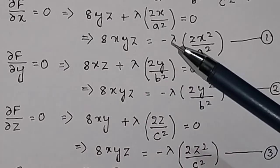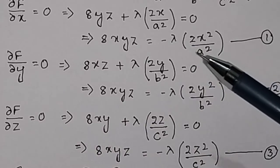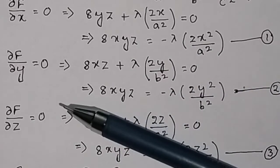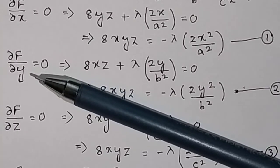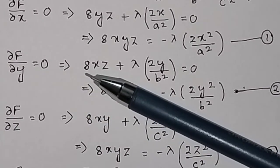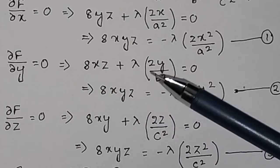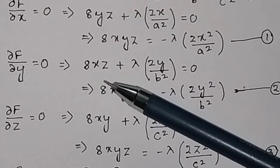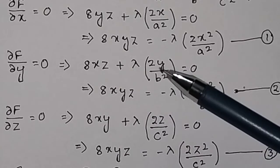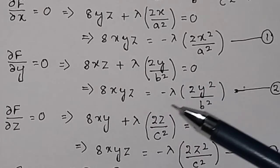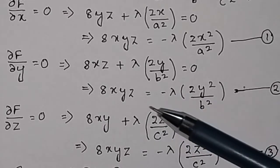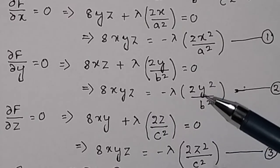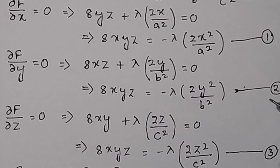Multiplying both sides by x gives 8xyz = −λ(2x²/a²). This is equation 1. Similarly, taking the partial derivative with respect to y and multiplying both sides by y gives 8xyz = −λ(2y²/b²). This is equation 2.